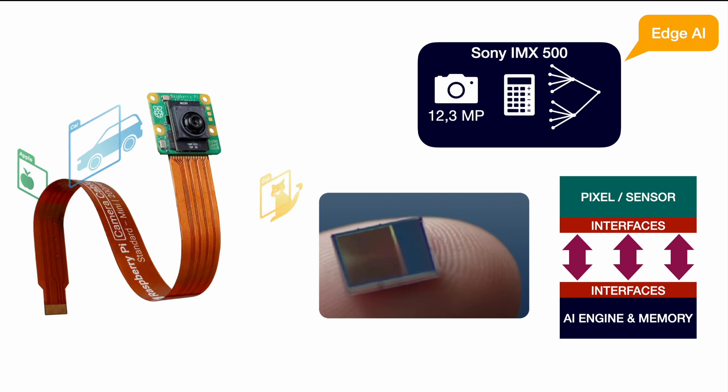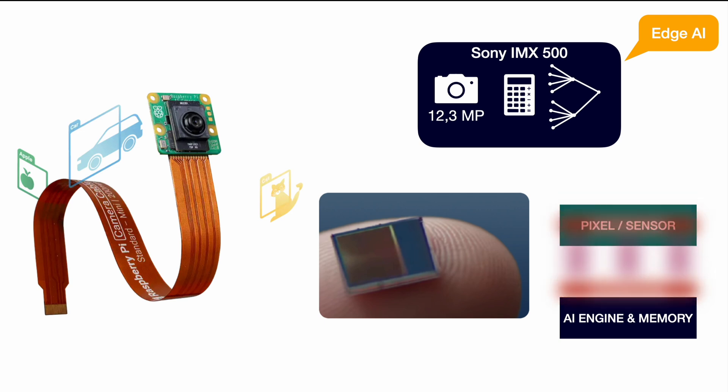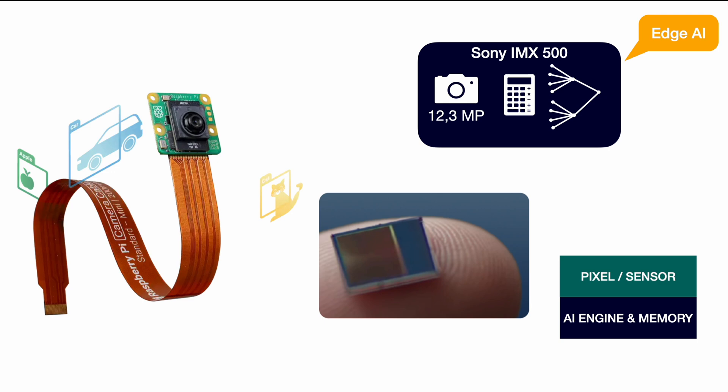What the IMX500 does is basically eliminate all those steps in between — all the translation and transmission steps. The sensor is directly fused onto a chip dedicated to the AI engine and all the memory needed to execute it. That's not just great from a packaging and latency point of view — it also enables us to use the camera and all its AI features with less powerful boards.